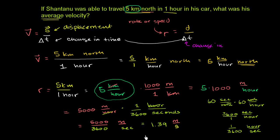So Chantanu was traveling quite slow in his car. Well, we knew that just by looking at this. 5 kilometers per hour, that's pretty much just letting the car roll pretty slowly.